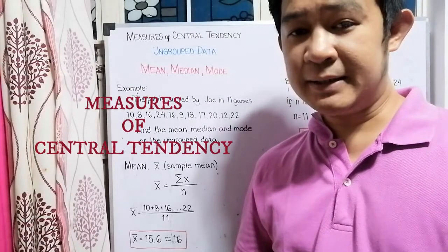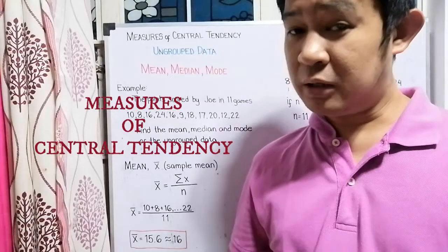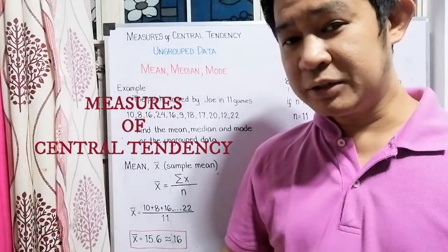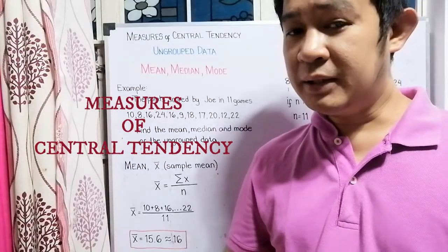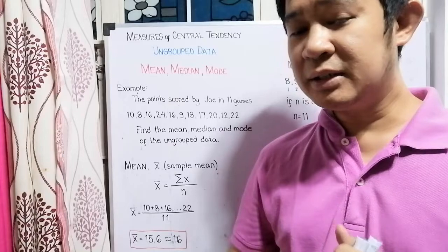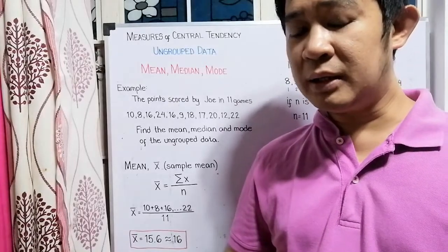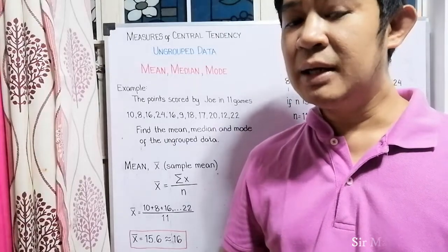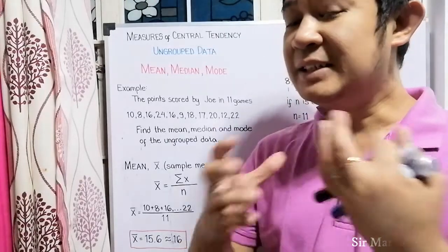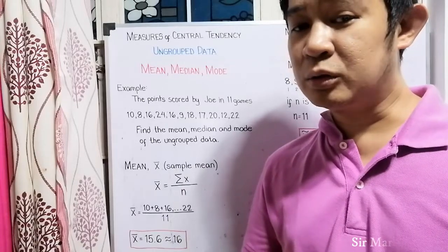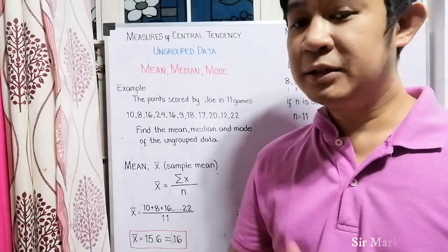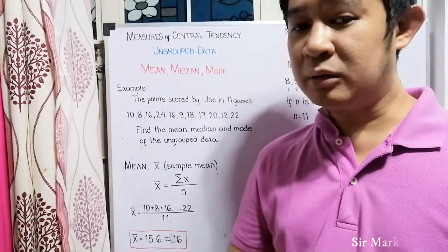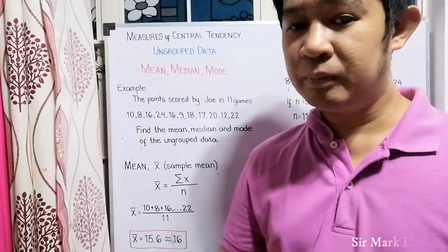Measure of central tendency is one way of describing your numerical data. For example, in quantitative research, in the part of data description, we do the measure of central tendency to obtain a single value. A single value that represents and describes a set of values wherein these values are the result of your observation, surveys, and interviews with the use of different techniques and methods of gathering data.